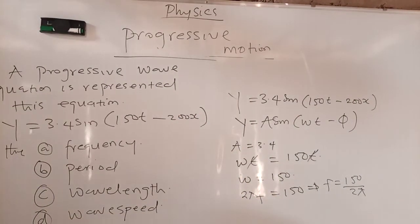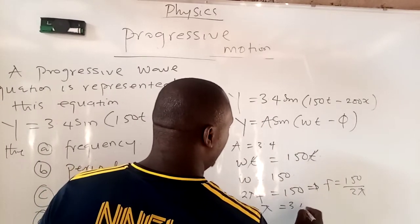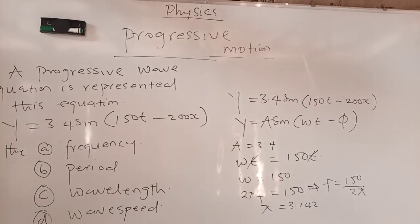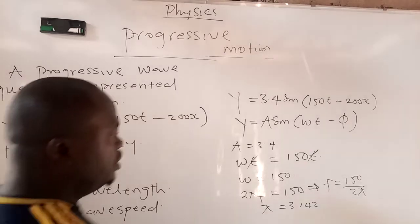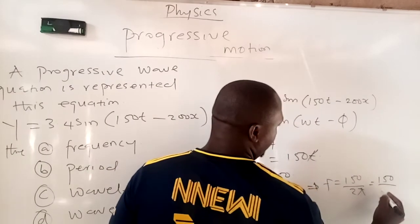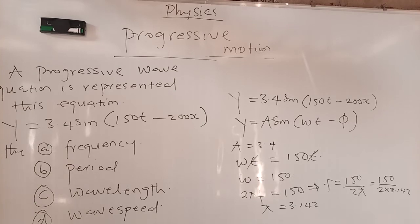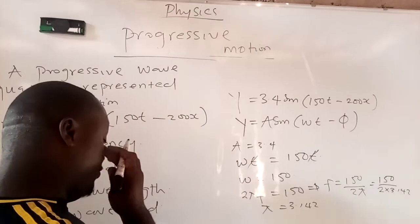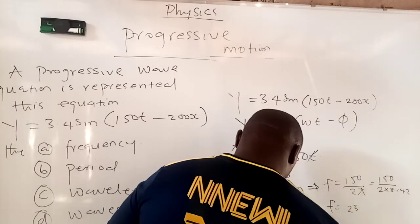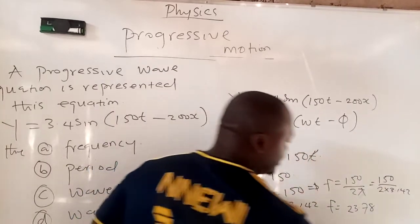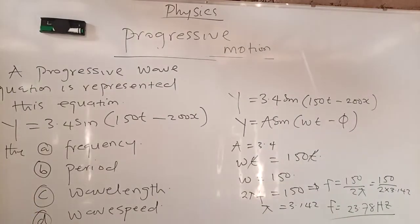Remember, your π is 3.142. π is 22 over 7. And when you press 22 divided by 7, what you should get is 3.142. So this is just 150 divided by 2 times 3.142. From here, you can see that your frequency F will give you 23.78. The SI unit of frequency is hertz. In physics, we don't joke with the SI unit. So your answer immediately is 23.78 hertz. This is so easy. Immediately you watch part 1 of the video, this becomes a child's play.